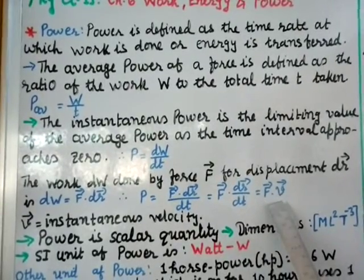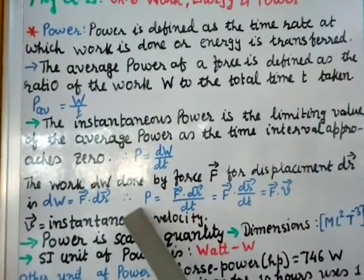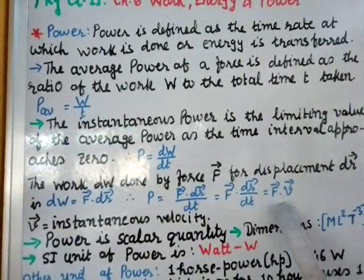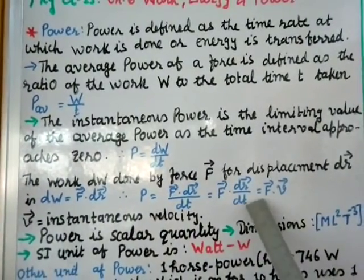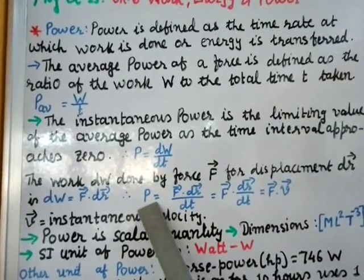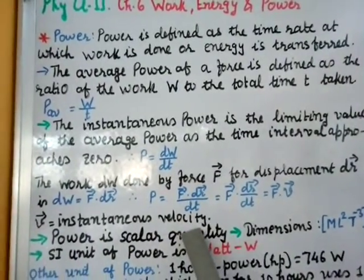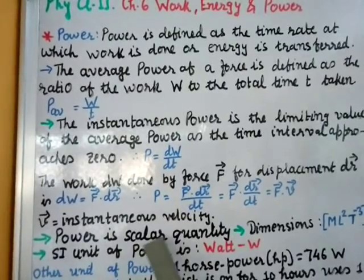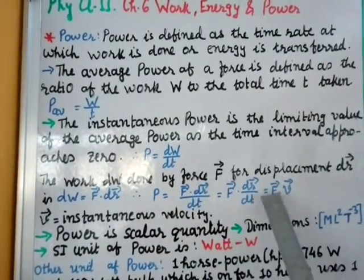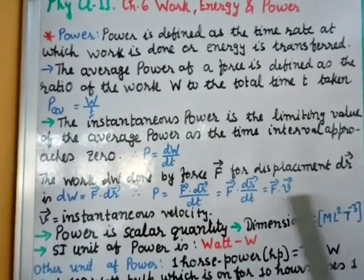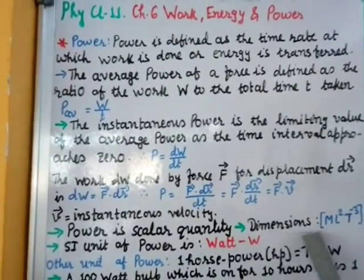Since dr/dt is velocity v, we can write P equals vector F dot vector v. This scalar product of force and velocity gives you the power, where v is the instantaneous velocity. Power is a scalar quantity because the dot product is used.